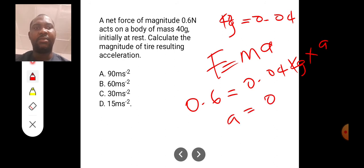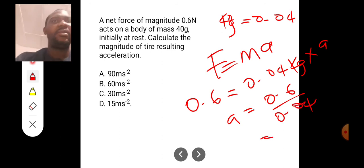Here we can get A. A will be 0.6 divided by 0.04. When we say 0.6 divided by 0.04, we are going to get 15. So the answer is 15 meter per second squared. That is it here, D.